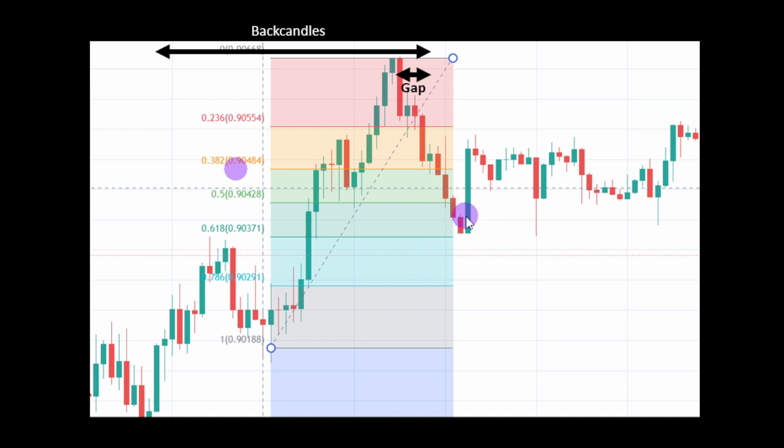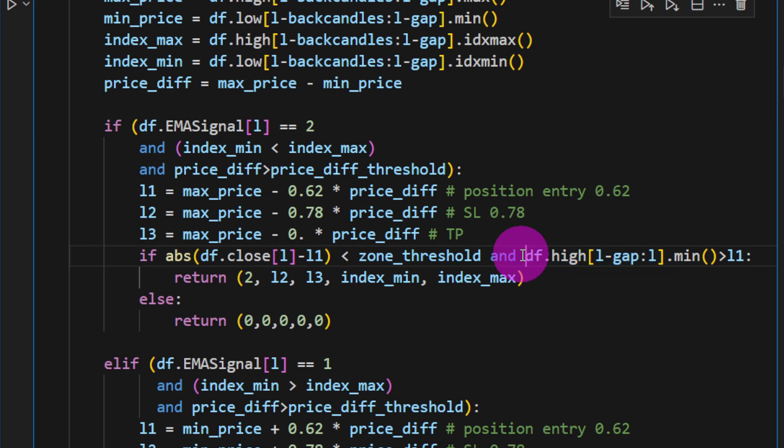If the difference between the closing price of the current candle minus L1 (the golden zone) is less than a zone threshold, we're taking a smaller zone around this 62%. It can be 61% or 60% or maybe 63%. We have a certain zone around it because we're accounting for the noise of the market. This is why we included the zone threshold parameter.